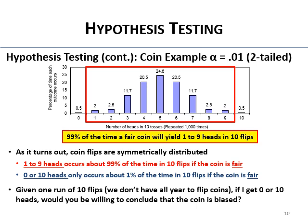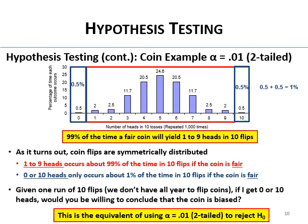Given one run of only 10 flips — because like a dissertation, you're not going to do it a thousand times — if you got zero or ten heads, would you conclude the coin is biased? If yes, that's equivalent to using alpha 0.01 two-tailed to reject the null. You have 0.5% + 0.5% = 1% — that's alpha 0.01. You're saying if you get zero or ten flips, you're willing to conclude the coin is biased — the coin is not fair.